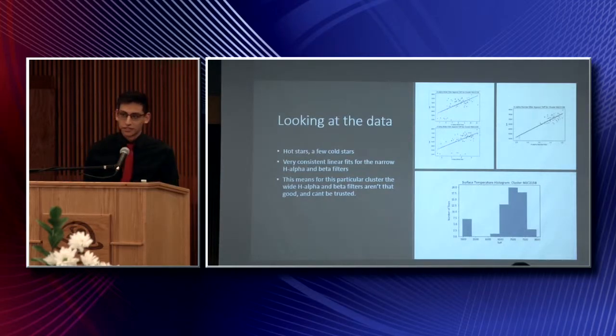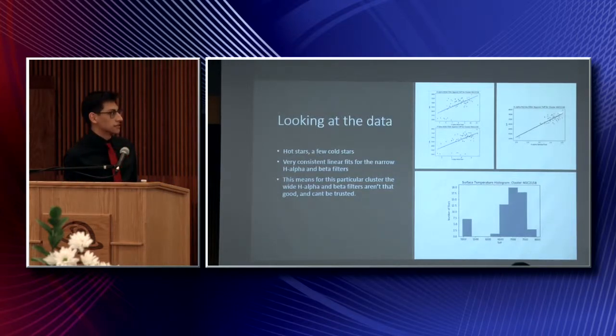But if you look at the H-alpha narrow filter, it's a lot better. The stars are more clumped together. What's interesting is that you can see that these stars here are completely separated from the other group. And they're pretty low in temperature, while the rest are pretty hot.